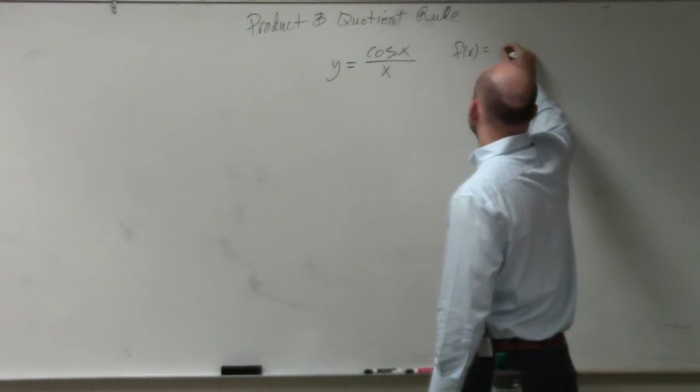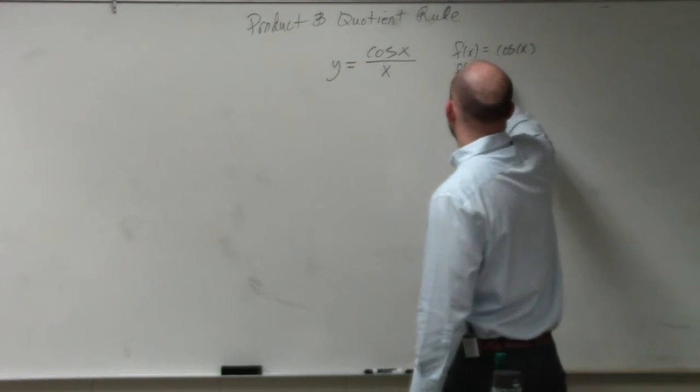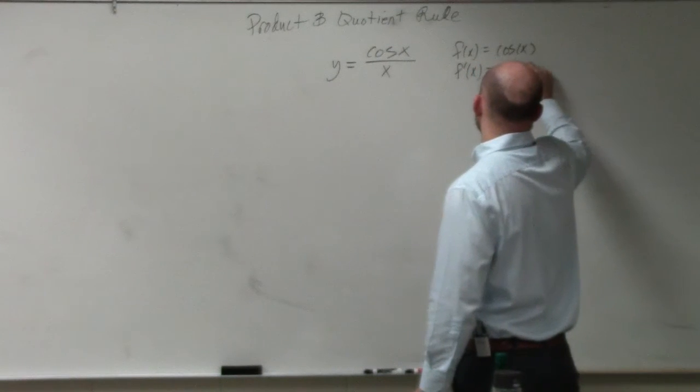So I can say f of x equals cosine of x. Therefore, f prime of x is equal to negative sine of x.